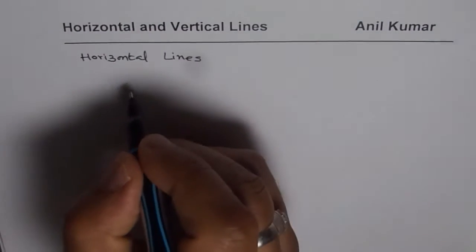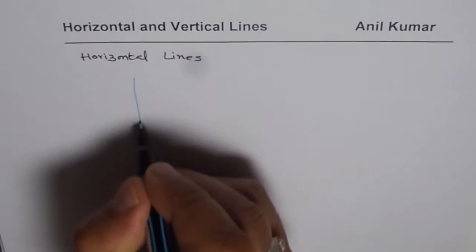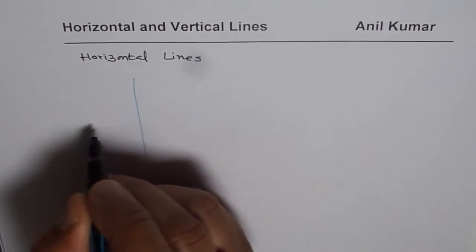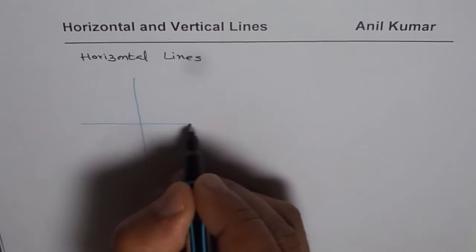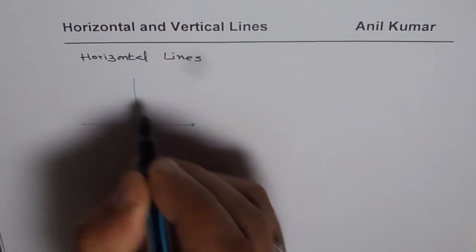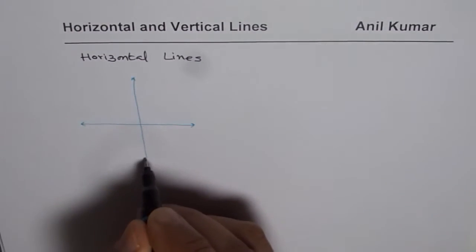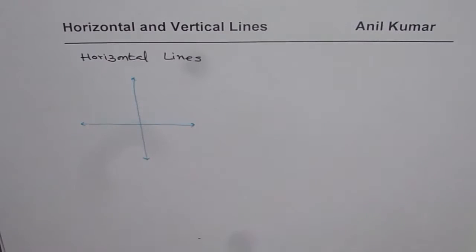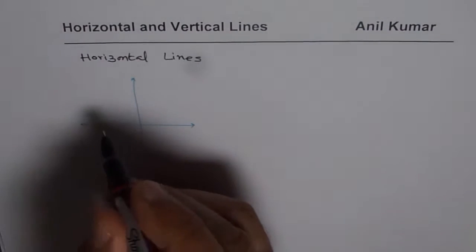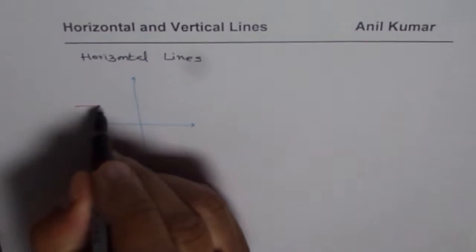Let me sketch some. Let us say this is a coordinate plane. Then a horizontal line will be kind of like this.